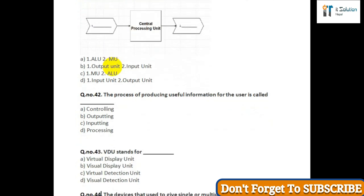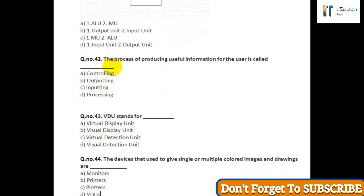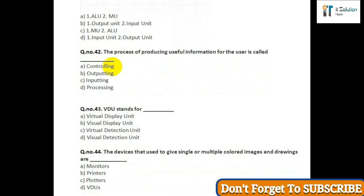Question number forty-three: VDU stands for — option A: virtual display unit; option B: visual display unit; option C: virtual detection unit; option D: visual detection unit. Question number forty-four: The devices that are used to give a single or multiple collective images and drawings are — option A: monitors; option B: printers; option C: plotters; option D: video.